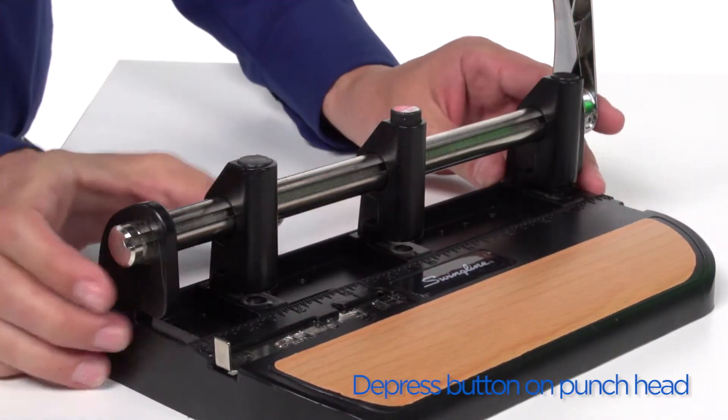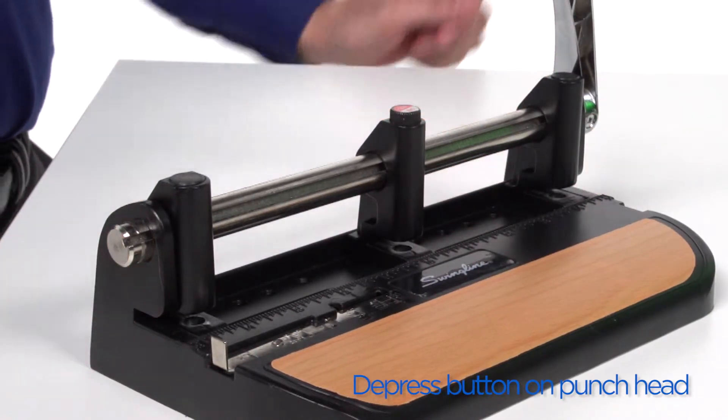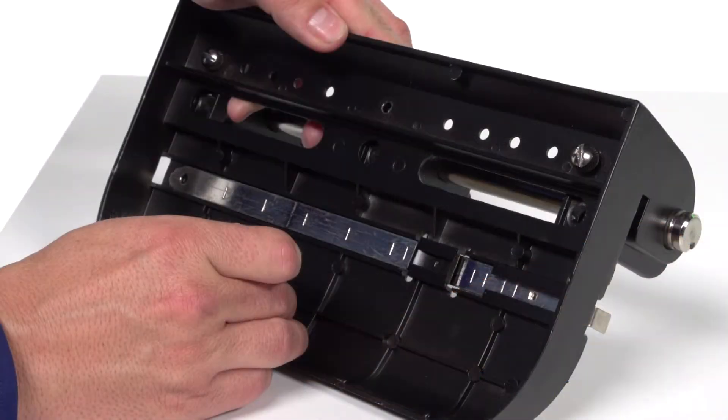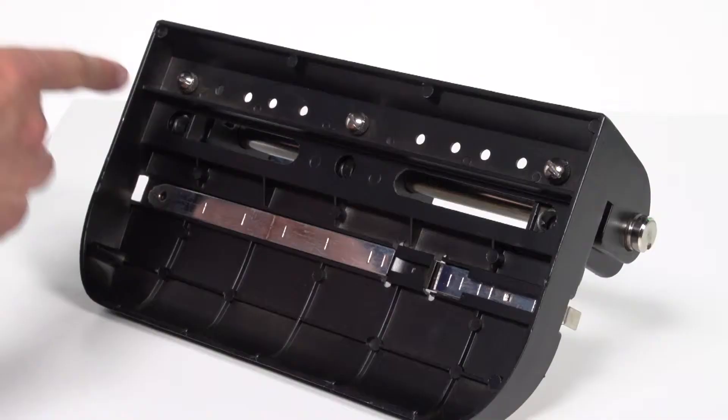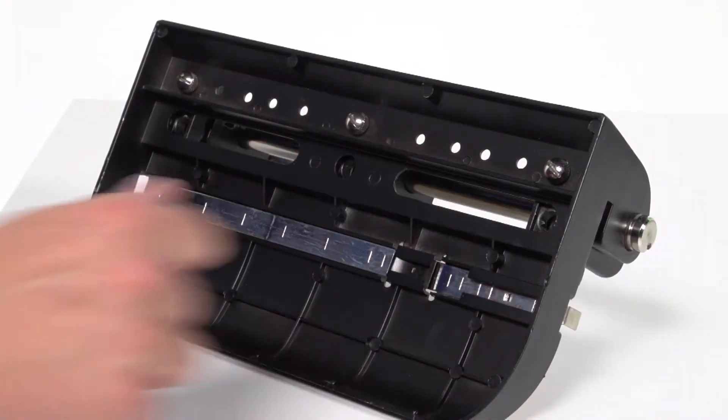You'll need to depress each punch head as the shaft slides through the punch head. Reposition the punch head, replace the screw and tighten. Do the same for the remaining two punch heads.